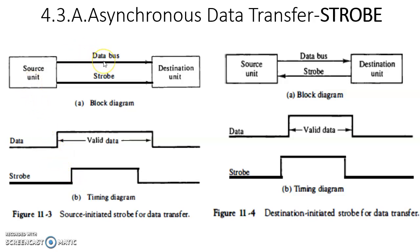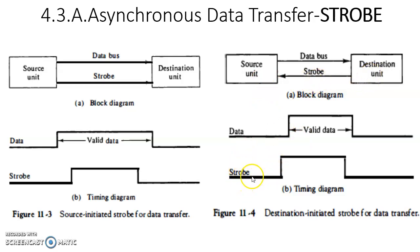If the transfer is initiated by the source, the source will place valid data on the data bus and then make the strobe signal high, changing it from low to high. Whereas if the data transfer is initiated by the destination, the source unit will first receive the strobe signal from the destination — the strobe signal will be made high from low to high — and upon recognizing this change, the source unit will place valid data onto the data bus. Here the data transfer is initiated by the source unit, and there it is initiated by the destination unit.